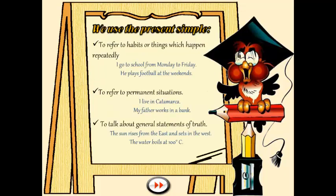The uses: we use the present simple to refer to habits or things which happen repeatedly. For instance, 'I go to school from Monday to Friday,' 'He plays football at the weekend.' The second use is to refer to permanent situations: 'I live in Catamarca,' 'My father works in a bank.' The third use is to talk about general statements of truth: 'The sun rises from the east and sets in the west,' 'The water boils at 100 degrees Celsius.'